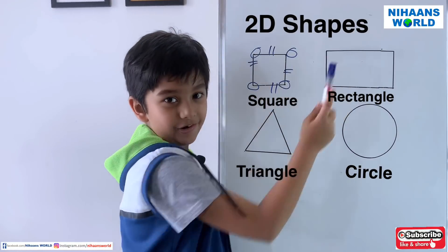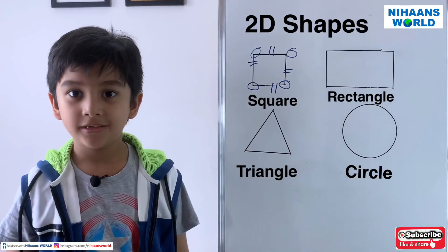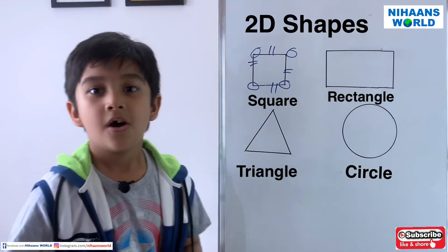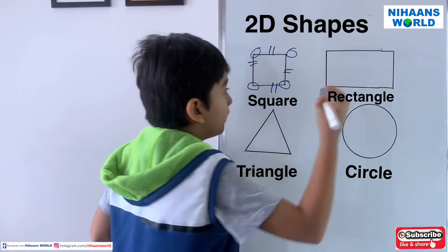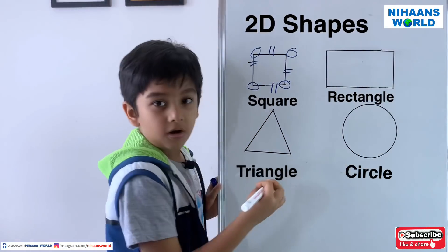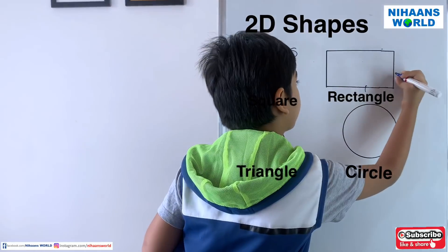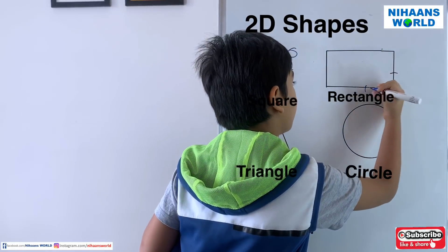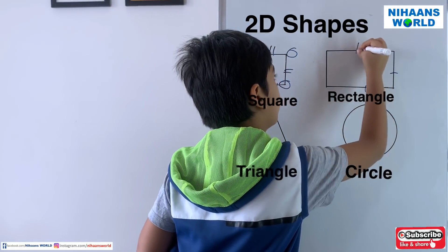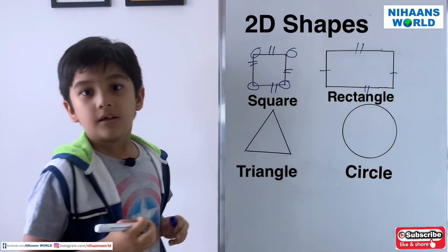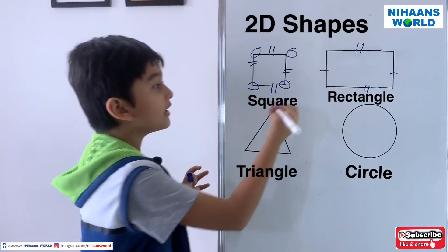This is a rectangle. It has four sides. The opposite sides of a rectangle are equal, and it has four vertices.